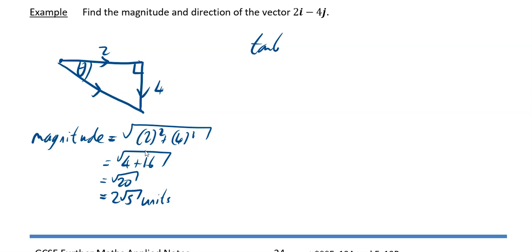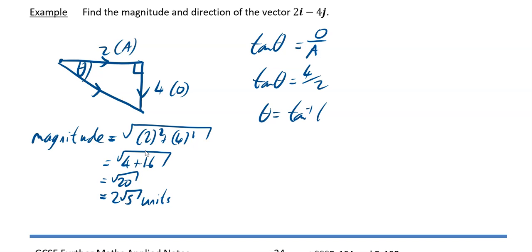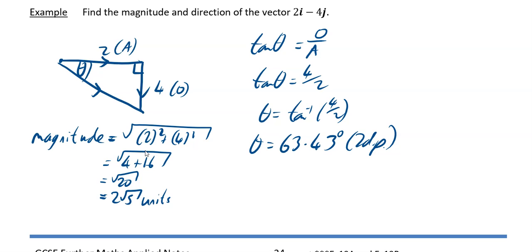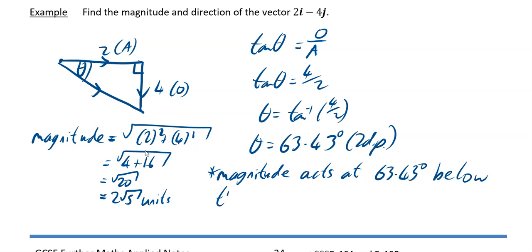To find the direction, tan theta equals opposite over adjacent, which is 4 over 2. So theta equals tan to the minus 1 of 4 over 2, giving theta equal to 63.43 degrees to 2 decimal places. The full answer is: magnitude 2 root 5 units, at 63.43 degrees below the horizontal.